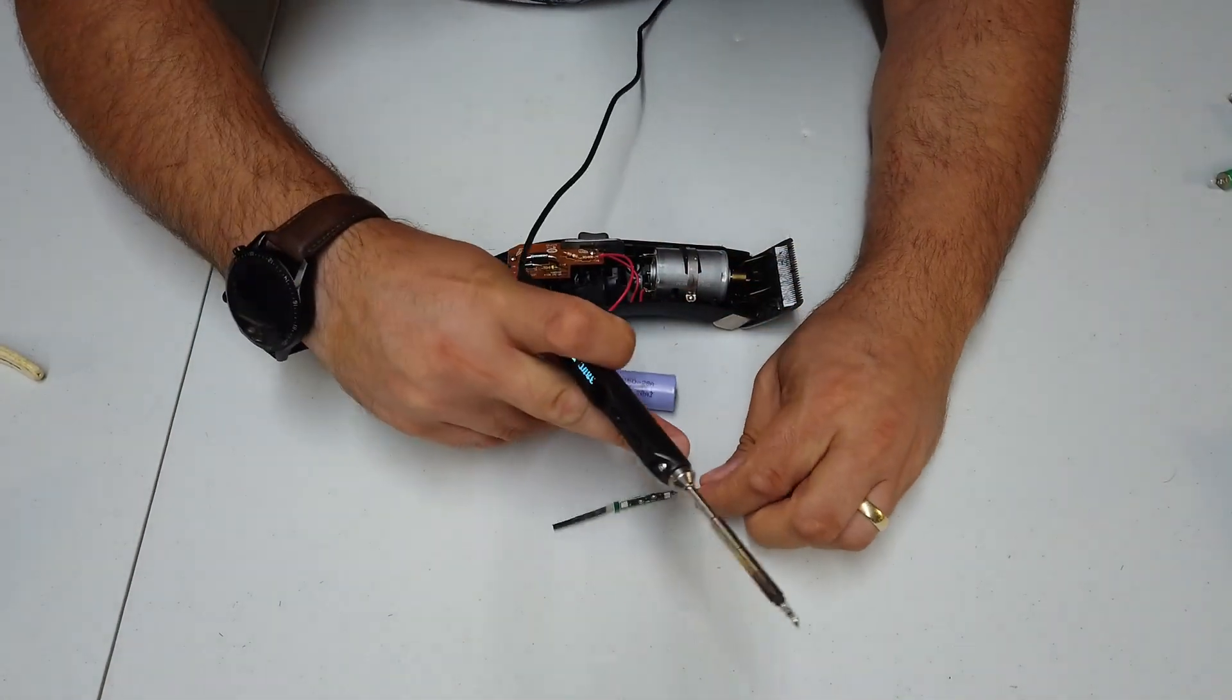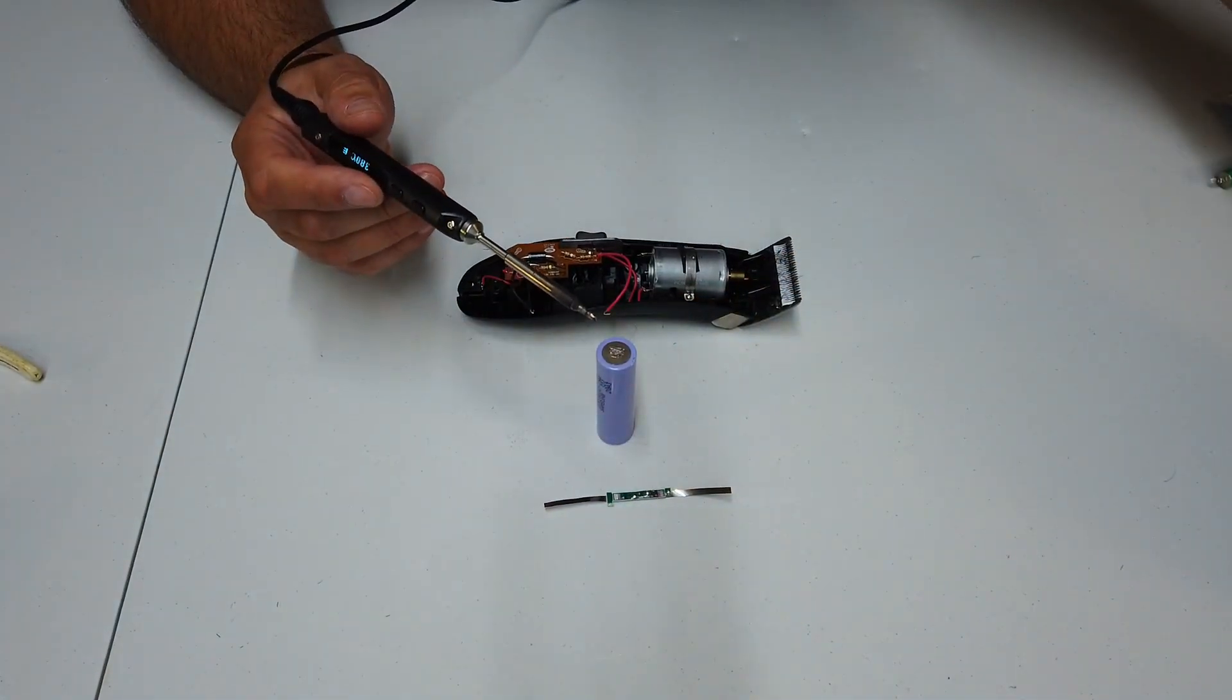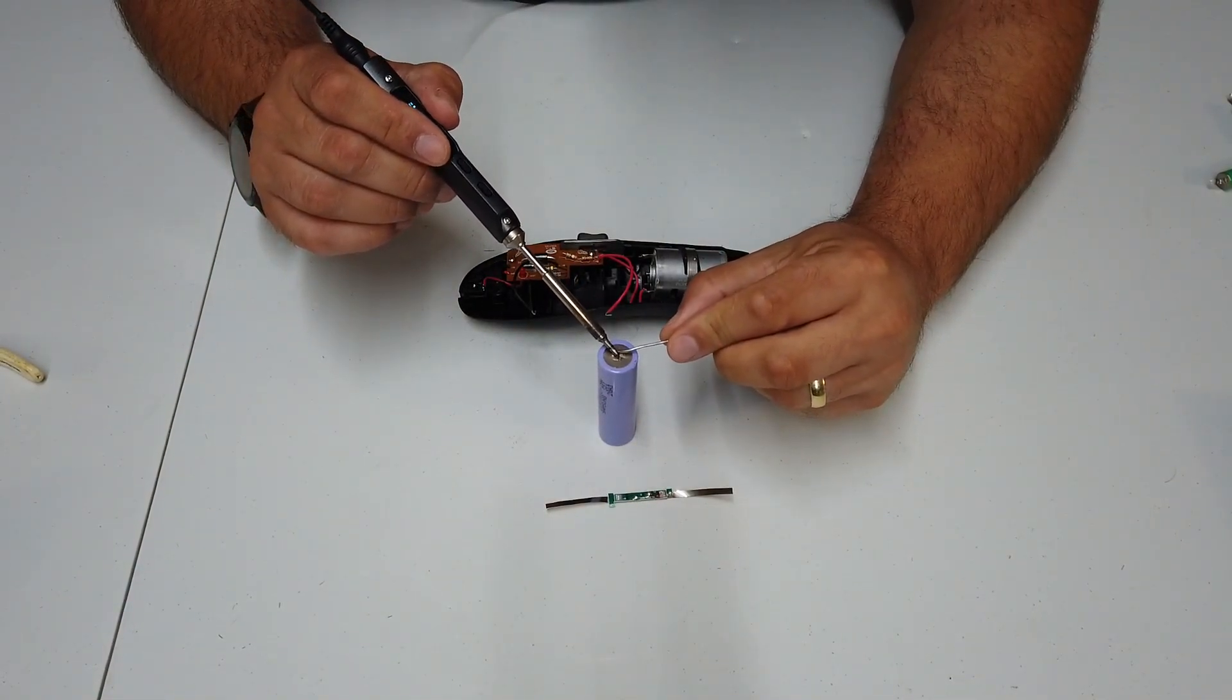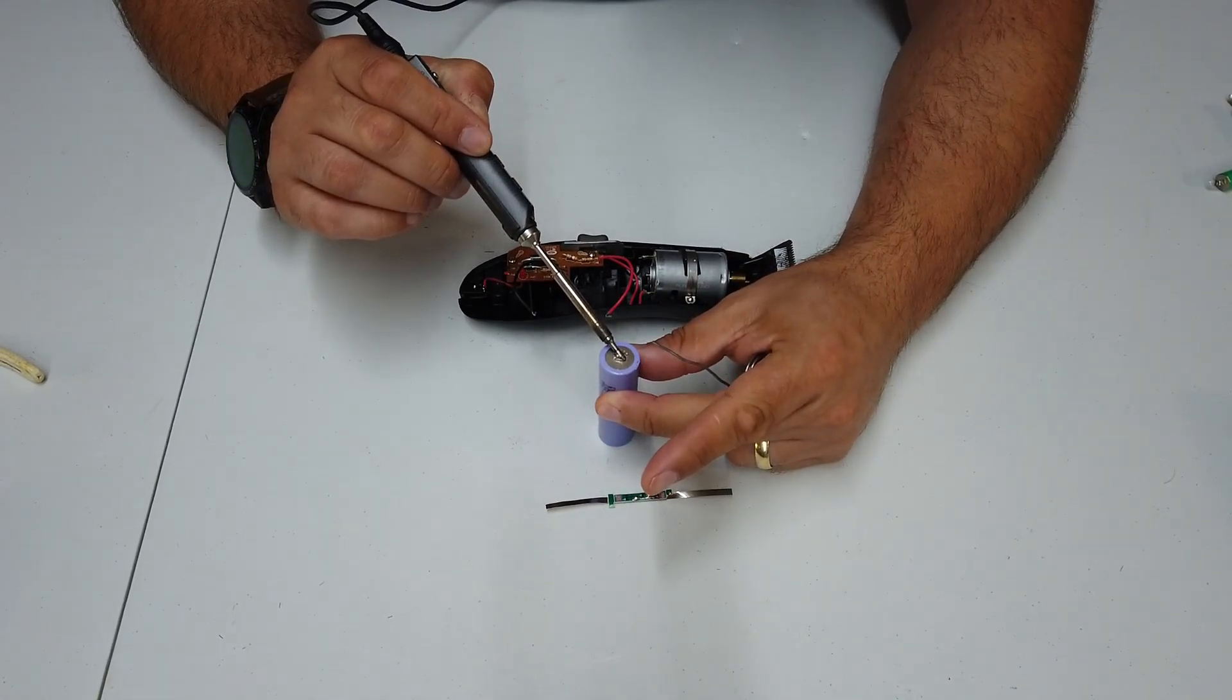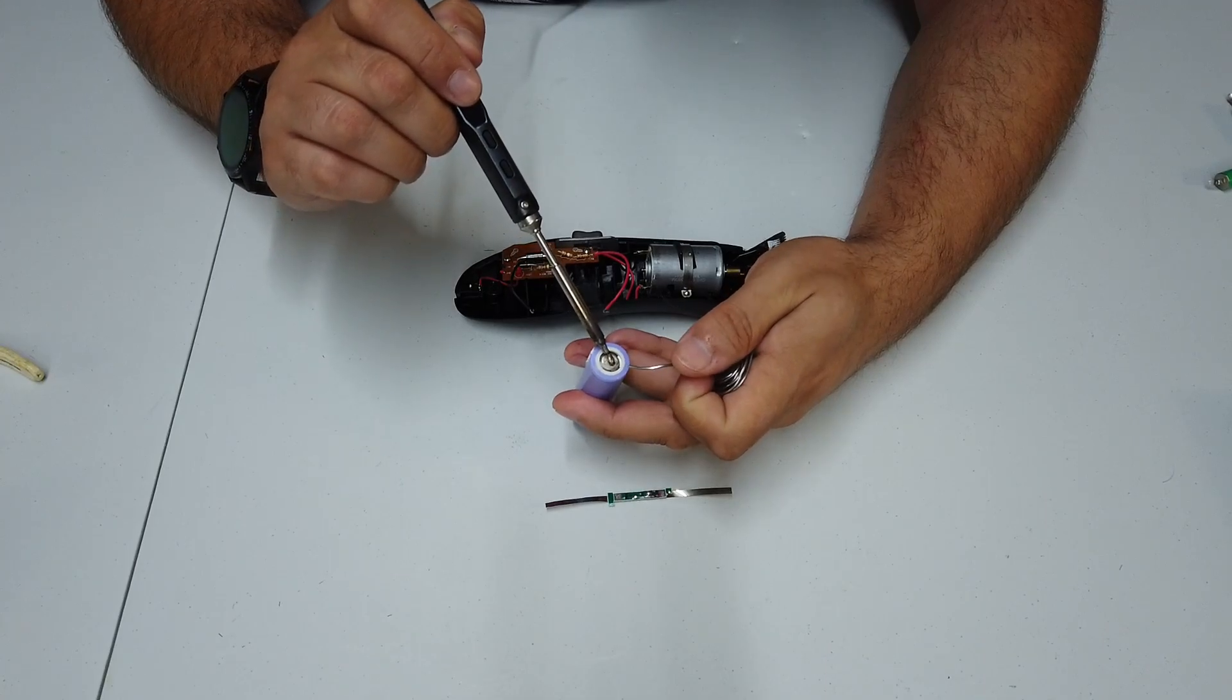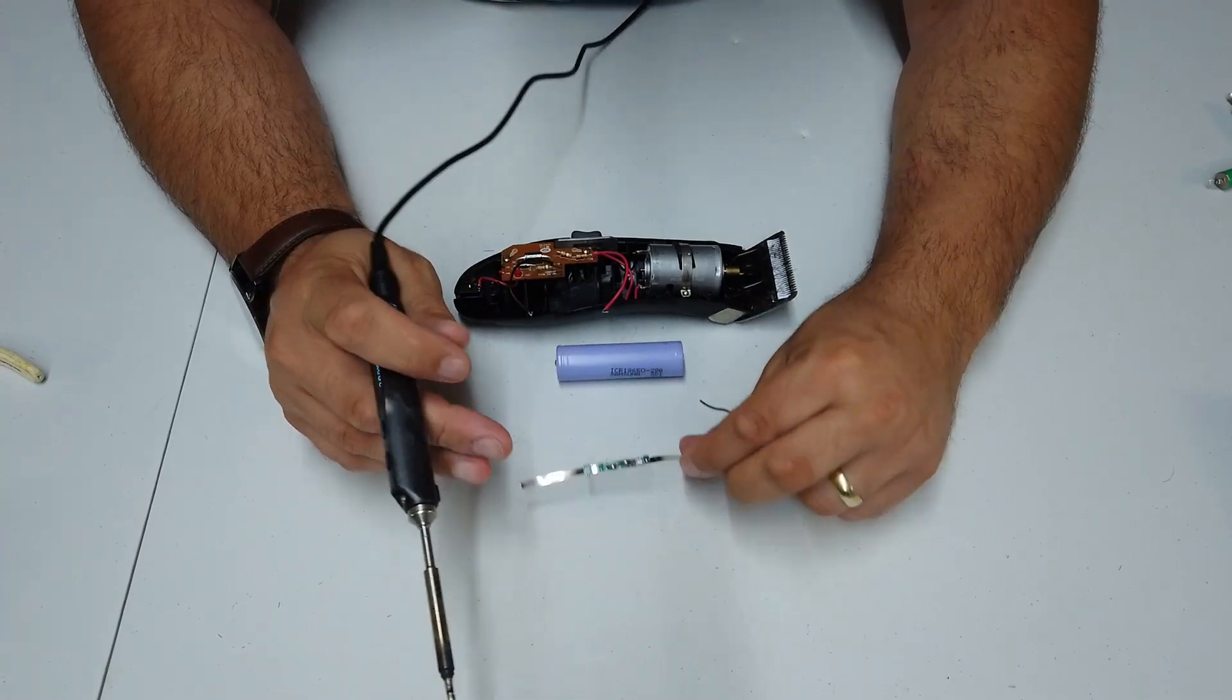Right, so next part of the mission is to apply a little solder to this lithium ion cell. A lot of people don't like doing this. A lot of people much prefer electrical welding. But I've done this so many times and I've never, touch wood, never had a problem.